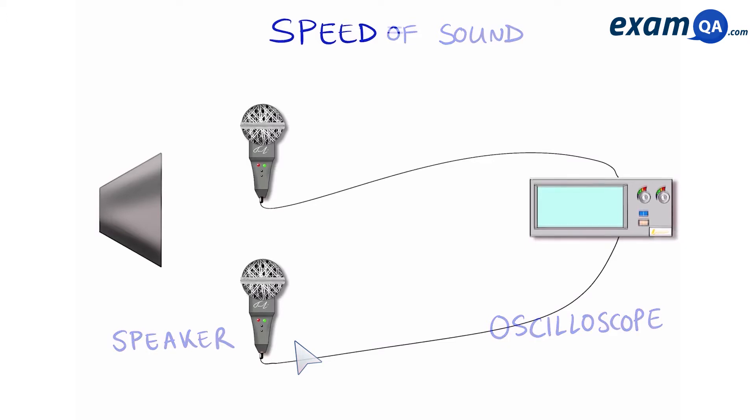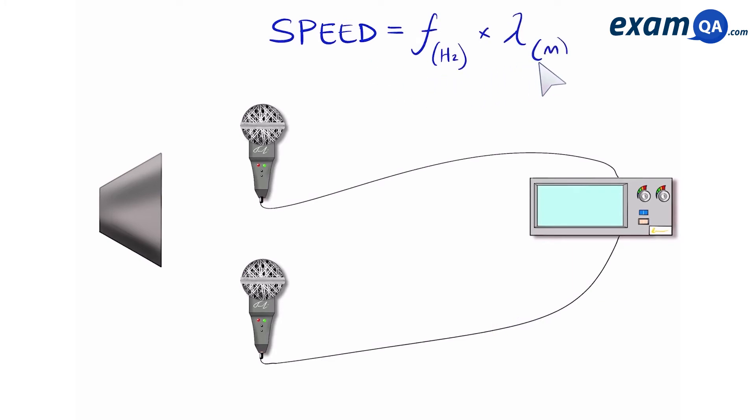Now we're going to use the formula that speed of sound is equal to its frequency times by its wavelength. Remember frequency is going to be measured in hertz and wavelength is measured in meters.